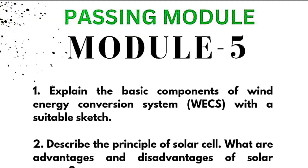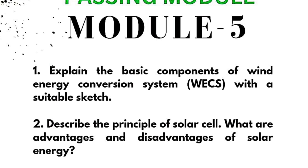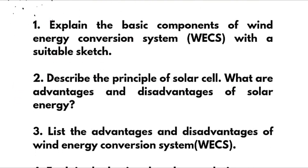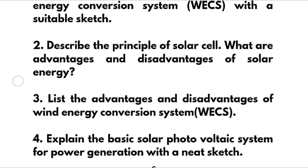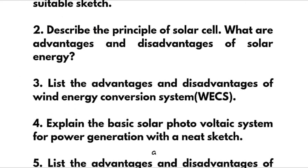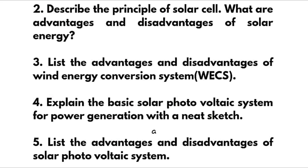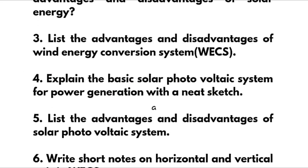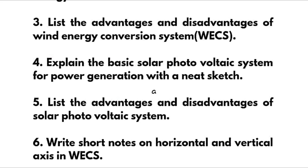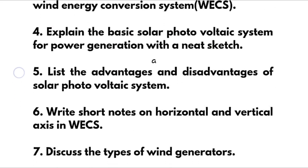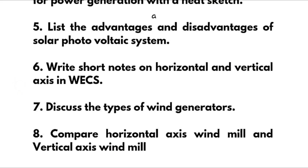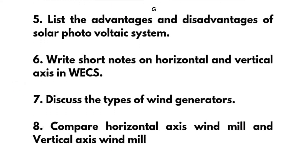Module 5 is the passing module. We have eight questions — if you cover these, you can easily get 20 marks. The super important questions are: explain the basic components of Wind Energy Conversion System (WECS) with a suitable sketch; describe the principle of solar cell; advantages and disadvantages of solar energy; advantages and disadvantages of WECS; explain the basic solar photovoltaic system for power generation with a neat sketch; advantages and disadvantages of solar photovoltaic system; short notes on horizontal and vertical axis in WECS; types of wind generators; and compare horizontal axis windmill and vertical axis windmill.